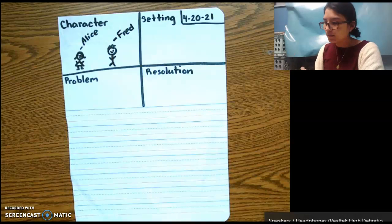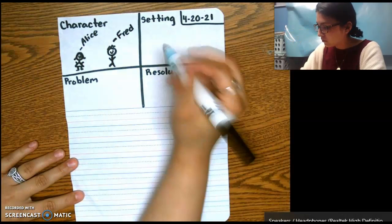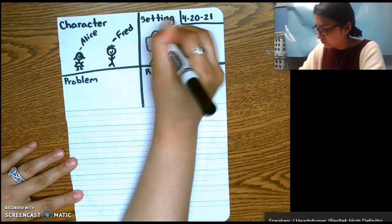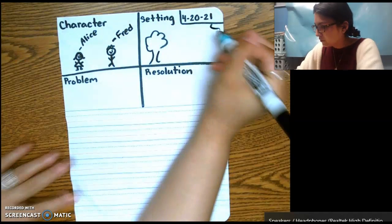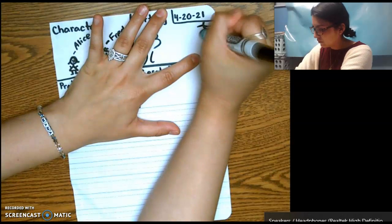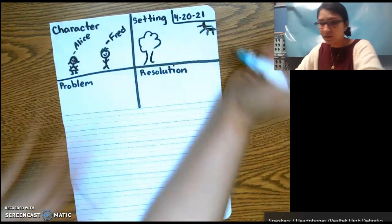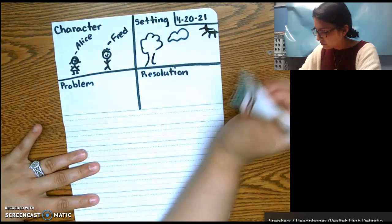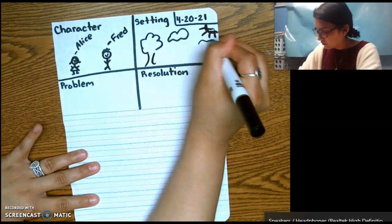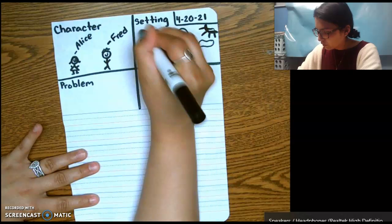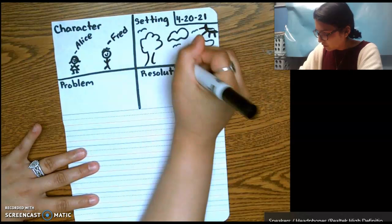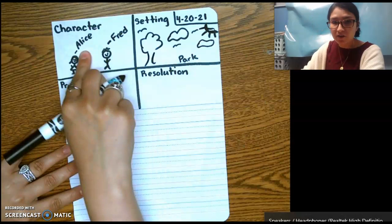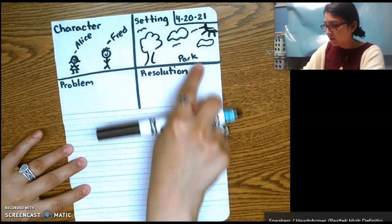My setting, I think it's going to be a park. That's the sun, clouds, little birds. I'm going to write right here: park. Remember, label. So here are my characters, Alice and Fred. This right here is park.